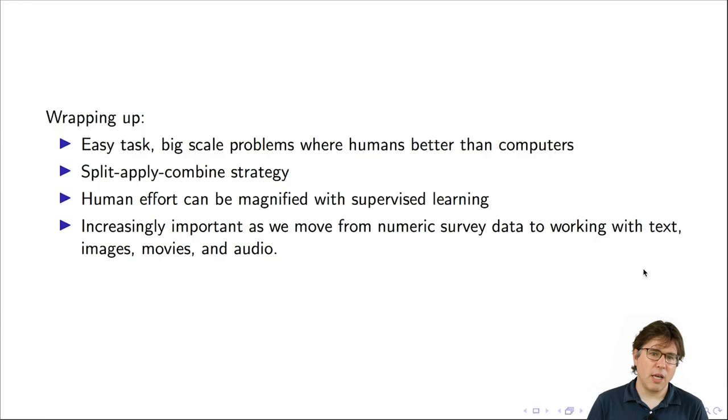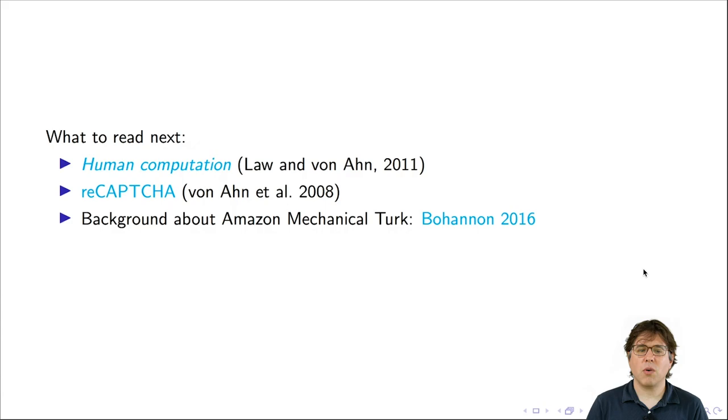If you'd like to know more, I'd recommend there's a book called Human Computation by Law and Vaughan. Vaughan is one of the first people associated with the idea of human computation, although the way he uses the term is slightly different than the way I've used it here. There's also a really great paper about a project called ReCAPTCHA by Vaughan. And then the last thing that you could read next is this article about Amazon Mechanical Turk. The reason why I think that's relevant here is that many of these human computation projects involve sending jobs to workers on Amazon Mechanical Turk. And so that platform is generally pretty important in this area of mass collaboration.